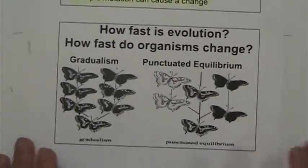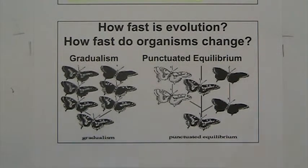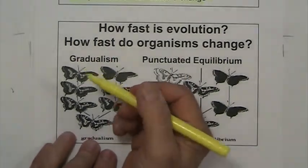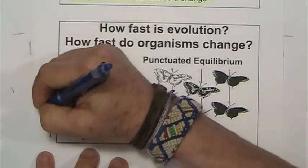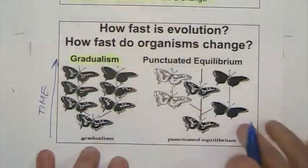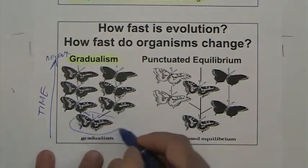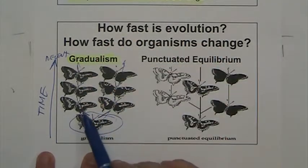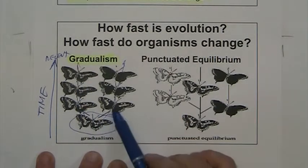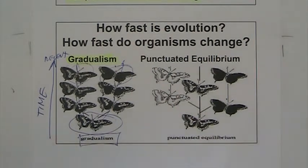One question you might have is: how fast is all this happening? Depending on the organism, the conditions, and the place, we notice two patterns. One is called gradualism, where the change is very gradual. If we put time on one axis — old to recent — you can see that from one ancestor, as we move through time, the changes are very gradual until you end up with two very different organisms. This is called gradualism: slow changes over time.